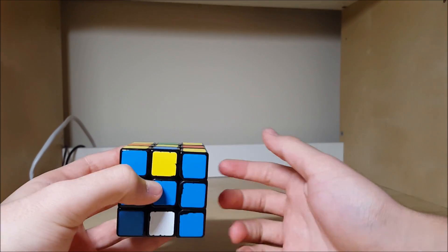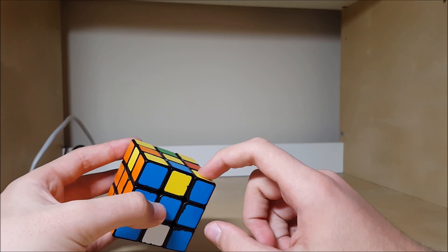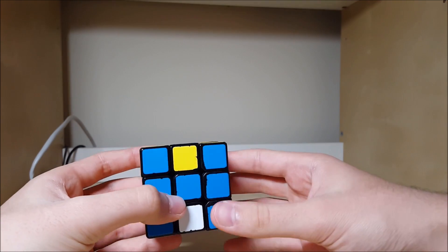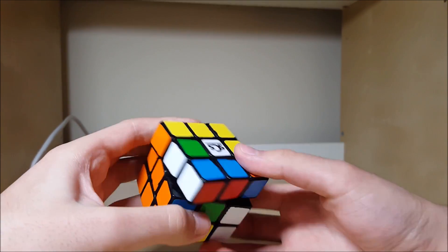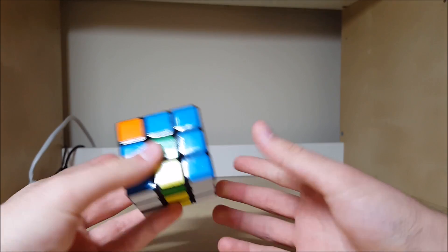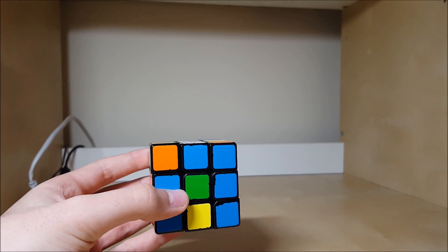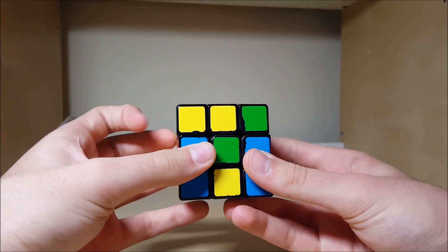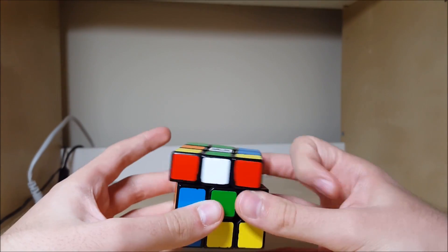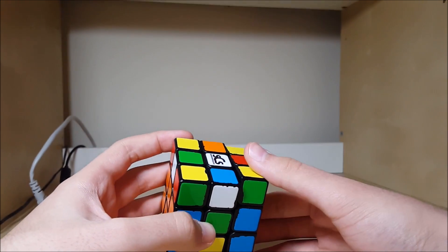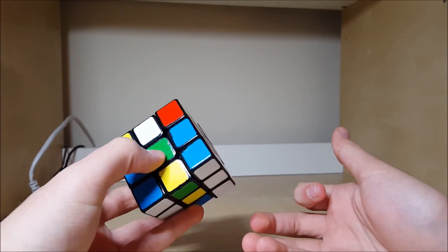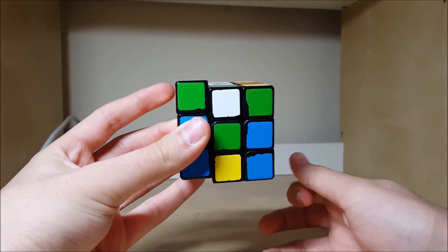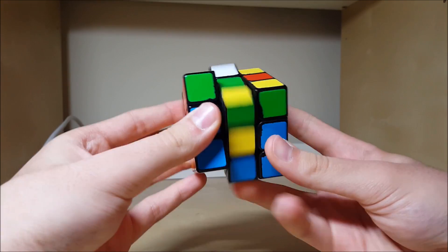So in order to avoid this case, what you want to do is learn an algorithm that preserves edge orientation, and an algorithm that flips edges. So I'll just do an example, maybe a sune or whatever. Okay, anti-sune. So if you just did a regular anti-sune here, you'd get a six flip, which is bad. But if you know an alternate algorithm, which in this case is very similar, it's just a fat anti-sune, you do that, and then you don't get a six flip, you get a nice case.